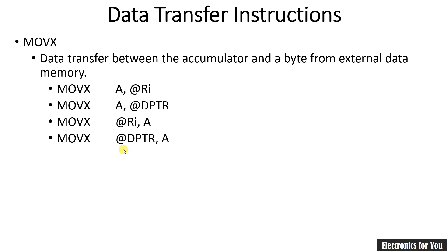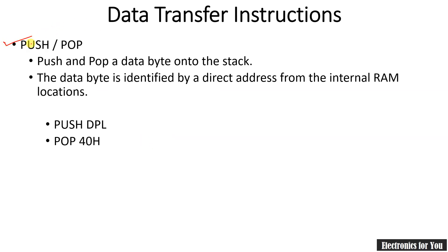The MOVX instruction is similar to MOVC but accesses external data memory. MOVX A, @Ri copies the content at the external memory location indicated by Ri into the accumulator. MOVX A, @DPTR copies the content at the external memory address indicated by DPTR into the accumulator. Conversely, MOVX @Ri, A and MOVX @DPTR, A copy the accumulator's content into the external memory location indicated by Ri or DPTR respectively. All MOVX instructions use indirect addressing mode.